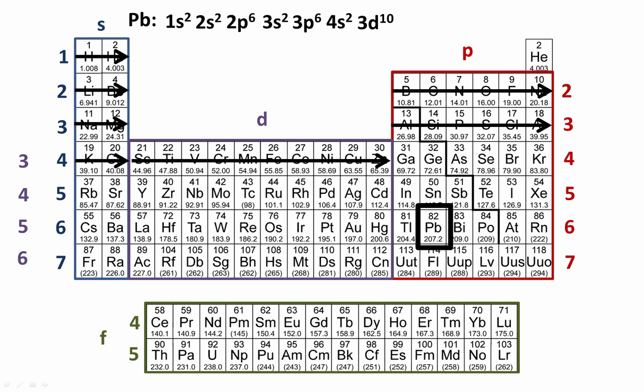Next, gallium begins the 4p subshell. Gallium to krypton is 4p⁶, then 5s², and 4d¹⁰ to get to cadmium. To get to xenon, we fill 5p⁶.